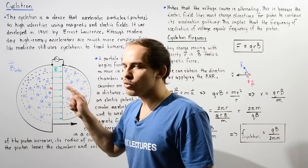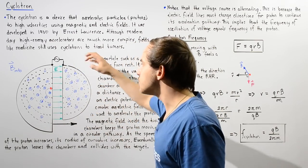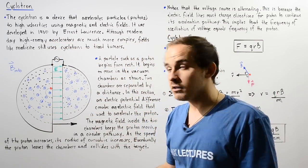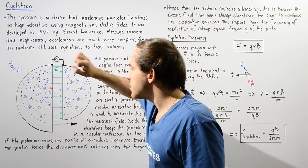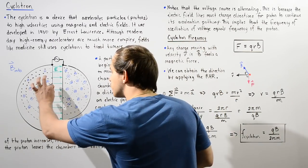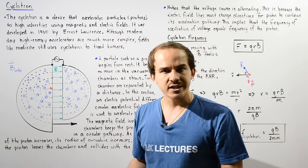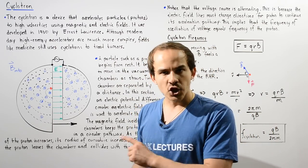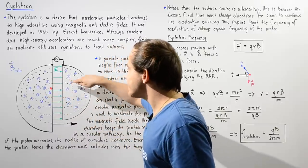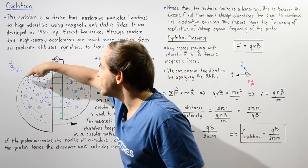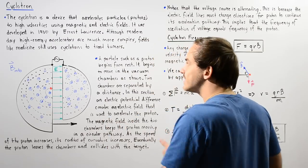When the proton is in either one of the two vacuum chambers, the magnitude of its velocity does not actually change. However, when the proton travels through the space where the electric field exists, the electric force will cause the velocity to increase. When the velocity of a particle moving in a circle increases, the radius of curvature also increases. So initially the radius is small, then as it accelerates the radius increases, and this continues until the radius and velocity and energy are great enough that the particle exits the cyclotron.